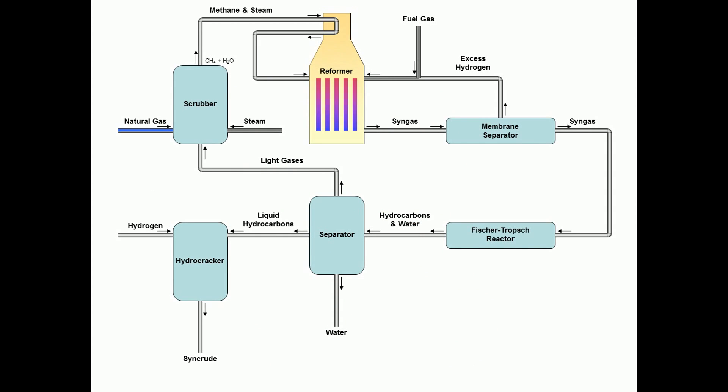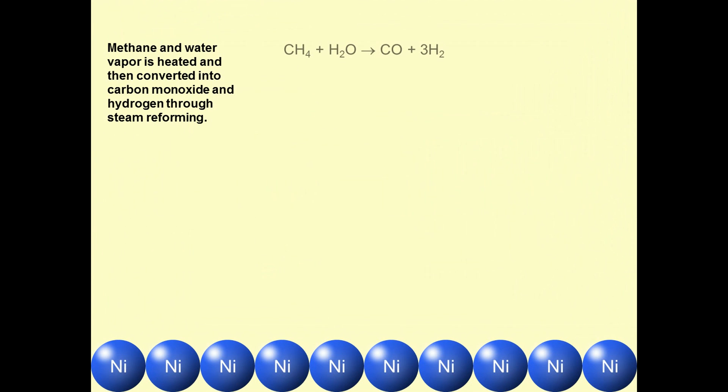The methane and steam are sent to a reformer. In the reformer, methane and water vapor are heated and then converted into carbon monoxide and hydrogen through steam reforming.